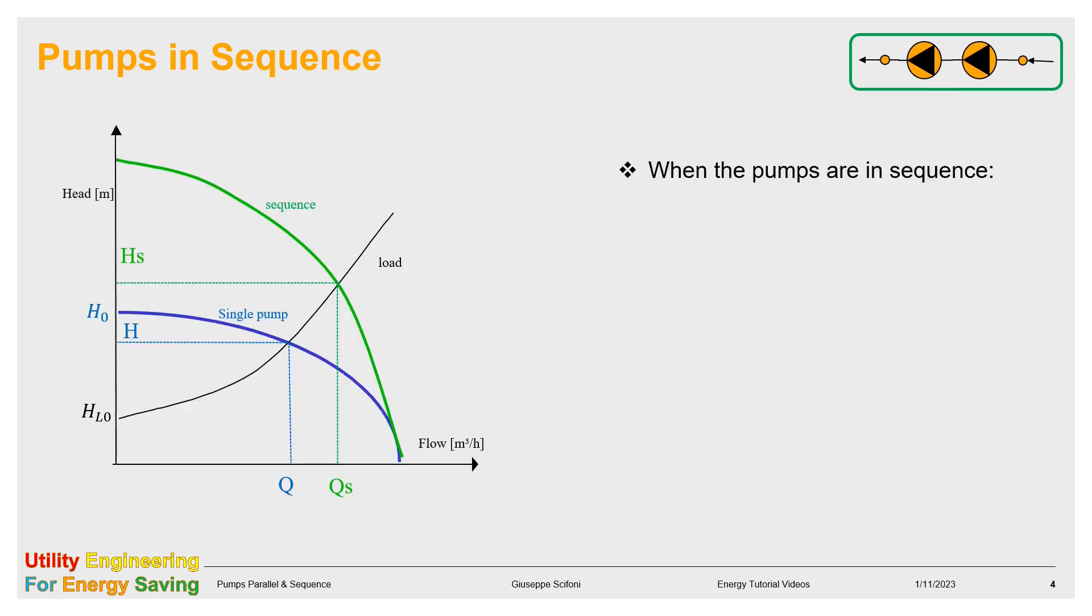When the pumps are in sequence, the corresponding heads are added, as we have seen. So, the curve of the single pump, the blue one, becomes the one displayed in green. The curve of the load, the black one, does not change instead. The working point moves along the load curve to match the green one. Actually, both head and flow changes, but if the pumps are correctly chosen, H increases more than Q.